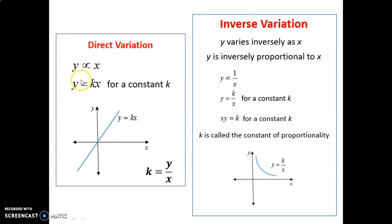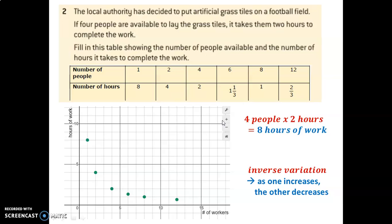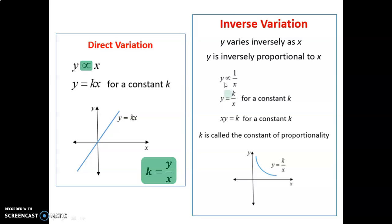Let's take a look at that in more detail. Here's direct variation — we had that symbol representing variation, and we knew that symbol turned into y equals kx. In direct variation, we found the constant by dividing y and x. Now we have inverse variation — we can say y is inversely proportional to x, using that same symbol. Y now varies inversely, and inversely always looks like 1 over x instead of x. To write this as an equation, we have y equals the constant k times 1 over x, which is k over x. Now, if we solve for k, we move the x over and have k equals x times y. So in inverse variation, when you multiply x and y, you always get a constant.